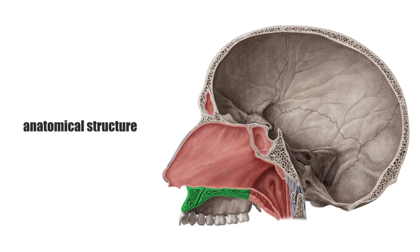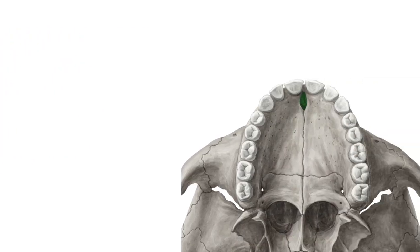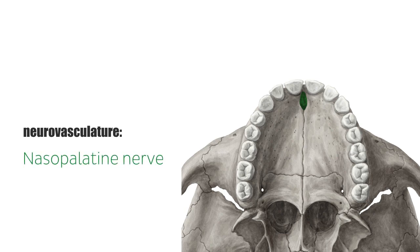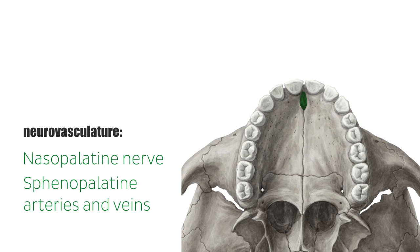Anteriorly, the palatine process of the maxilla covers the area between the two sides of the maxillary dental arch until it meets the two horizontal palatine processes posteriorly. These processes are fused down the midline as the two embryonic palatine shelves of the maxilla. In the anterior midline, the incisive foramen, seen here highlighted in green, can be found. This foramen transmits the terminal branches of the nasopalatine nerve and the sphenopalatine arteries and veins.